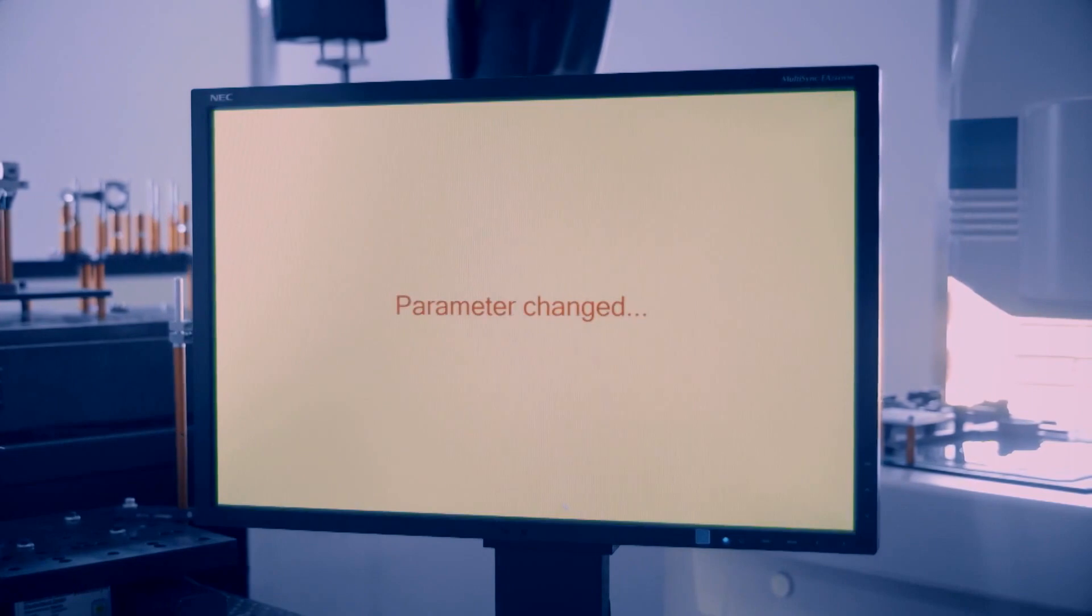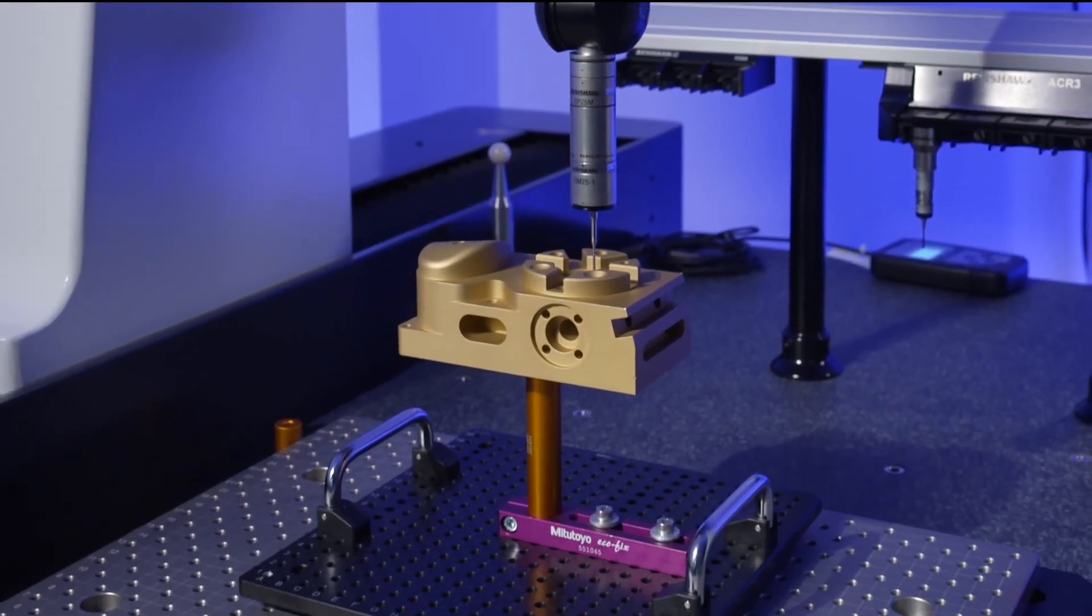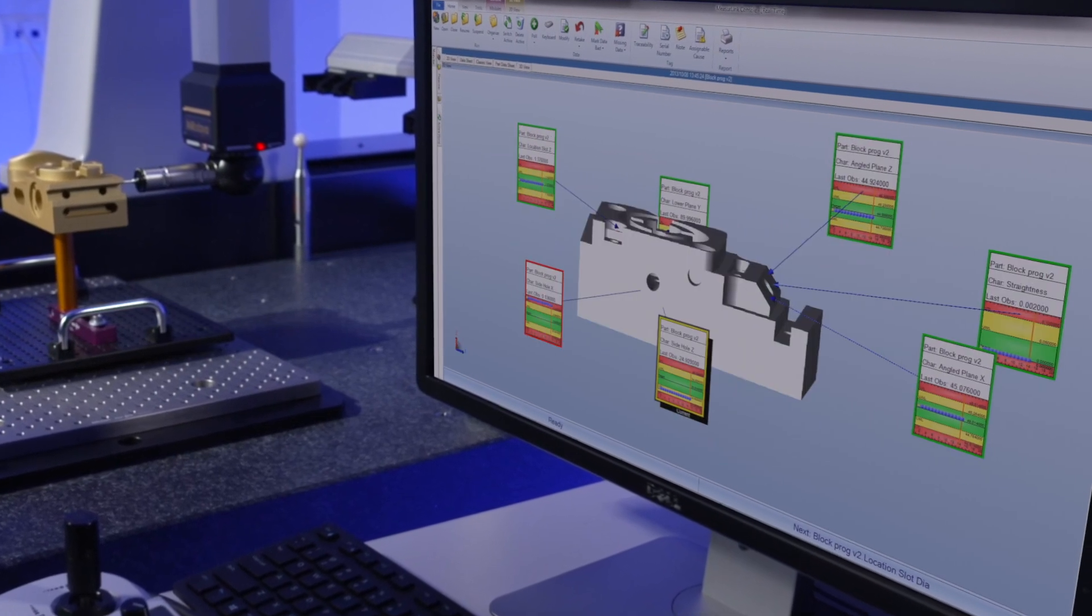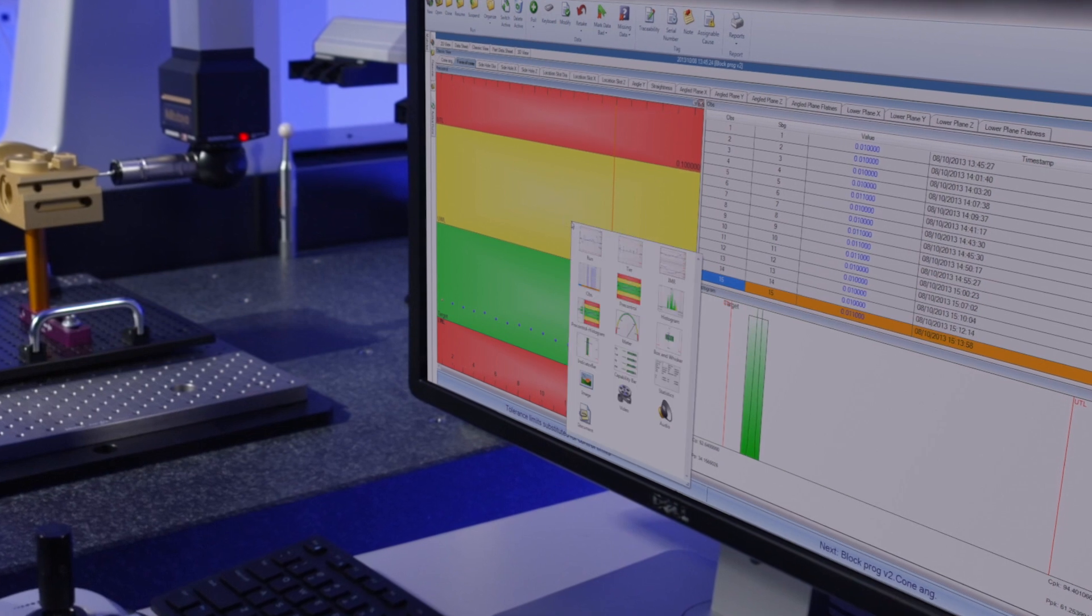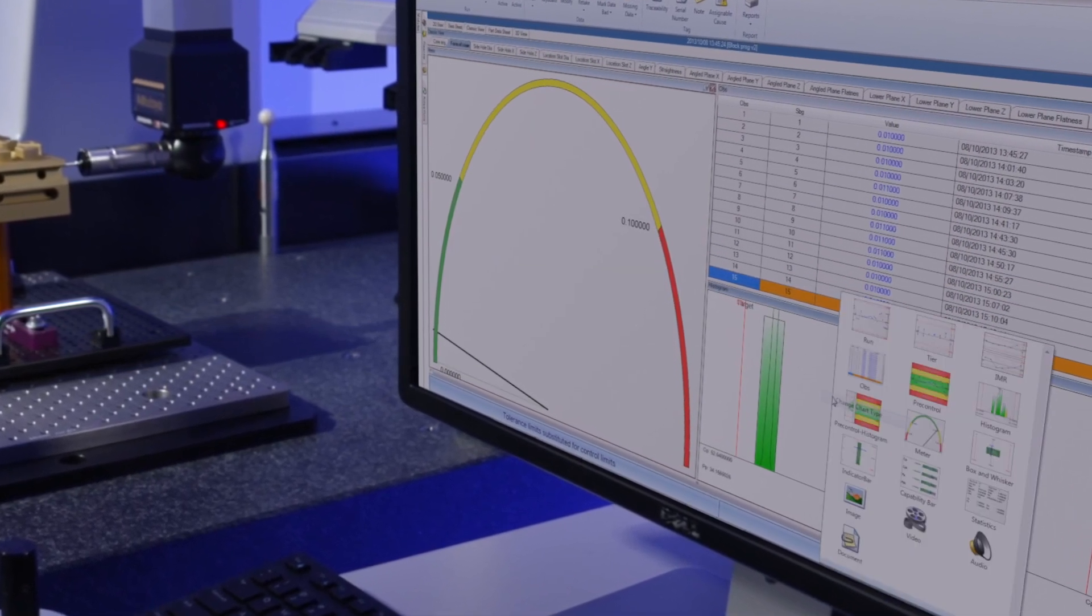allowing preventative maintenance and improved productivity. Combined with the latest version of Mitutoyo's measure-link software, manufacturing process information is centrally managed to maximise productivity and reduce defective products by collecting and analysing data in real time.